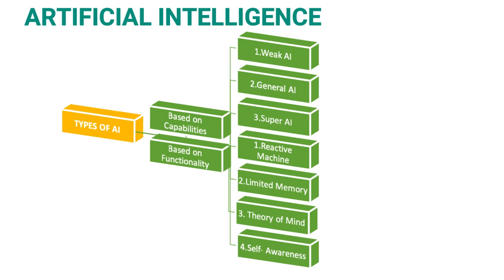Based on functionality, AI involves Reactive Machines, Limited Memory, Theory of Mind, and Self-Awareness. A Reactive Machine AI system does not store information or past experience for future actions; it can only focus on current scenarios and react with the current best possible action. Limited Memory AI can store past experiences or some data for a short period of time. Theory of Mind AI should understand human emotions, people's beliefs, and be able to interact socially like humans.